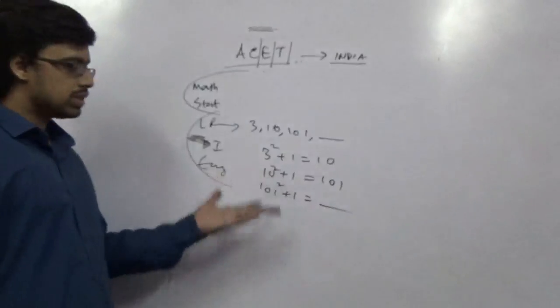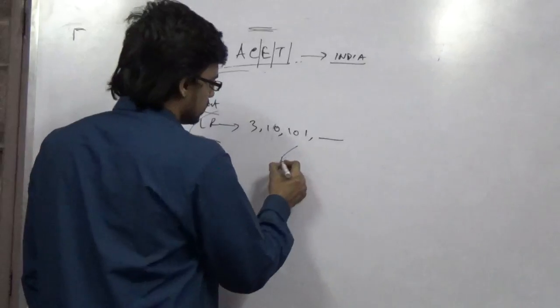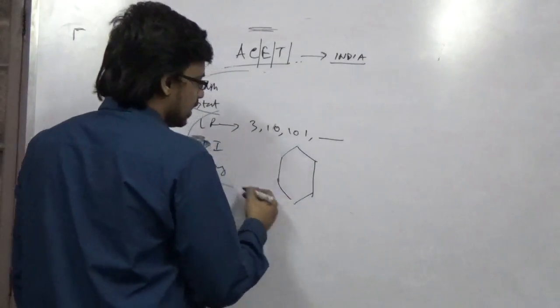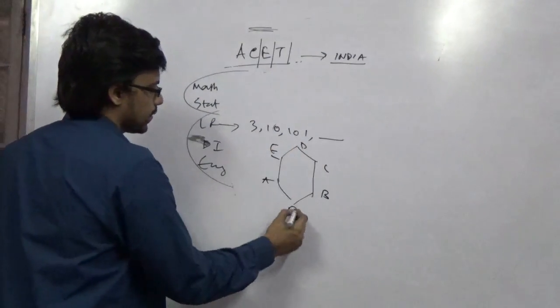So this is the type of pattern which we follow there. Or there may be questions like A is sitting beside B, B is sitting beside C. In that way you have to form a hexagonal pattern in some places.